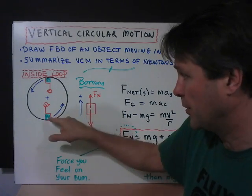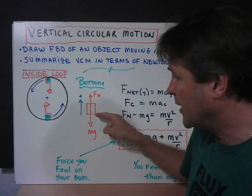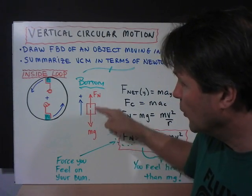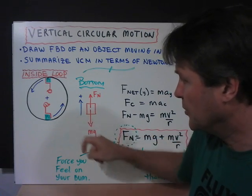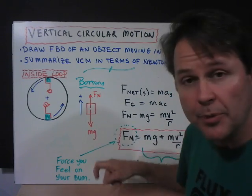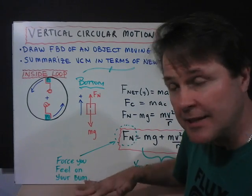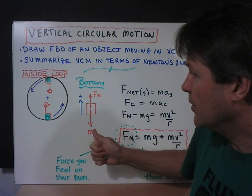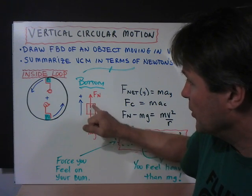First, let's look at the bottom. Here's the free body diagram of the person at the bottom of the loop. There are two forces acting on the person. Gravity pulls the person down, pushing them into the seat, and the seat pushes upward on their body.